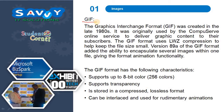GIF, the Graphics Interchange Format, was created in the late 1980s. It was originally used by the CompuServe online service to deliver graphic content to their subscribers. The GIF format uses LZW compression to help keep the file size small. It supports up to 8-bit color, meaning 256 colors.